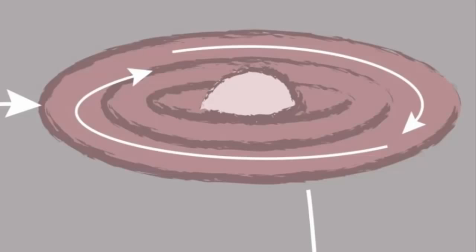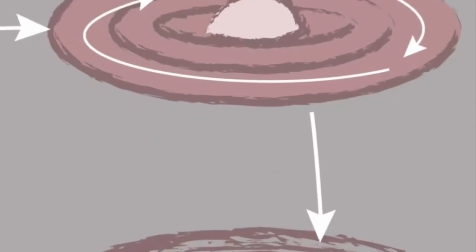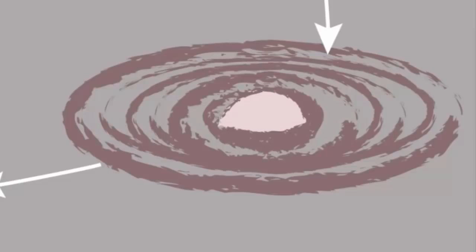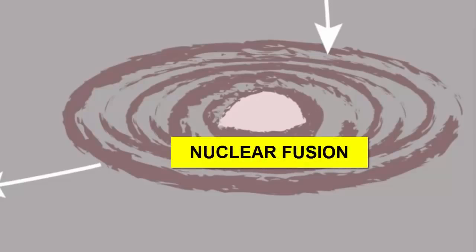The center of the disk usually contains the largest concentration of gas, and eventually those balls of gas can become so dense and hot that nuclear fusion can occur in their cores.